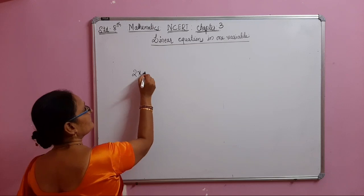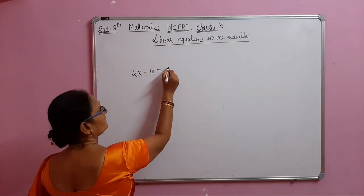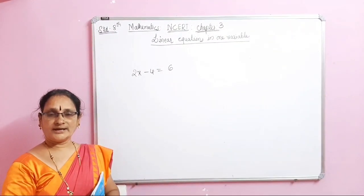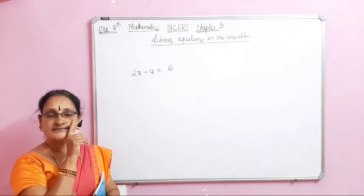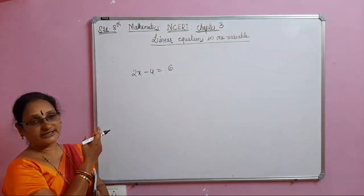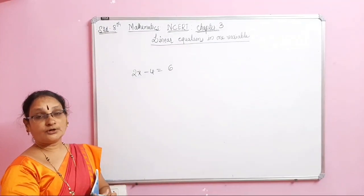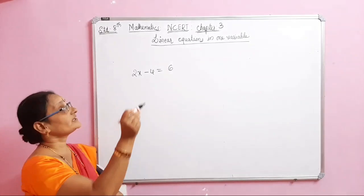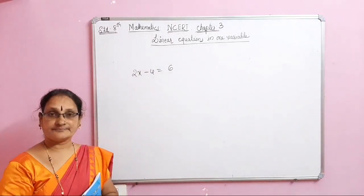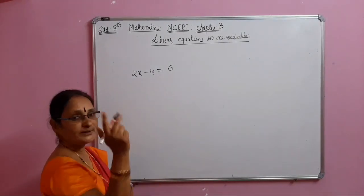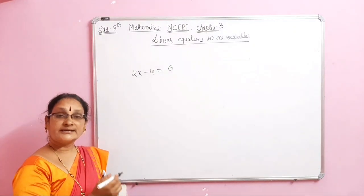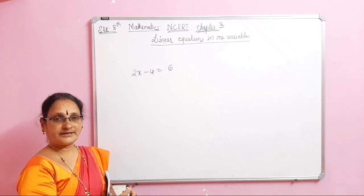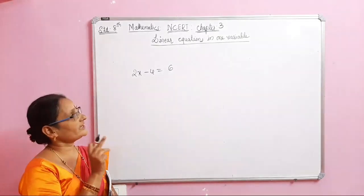2x minus 4 equal to 6. This is one linear equation. Now we have to solve it. There are two methods to solve linear equations: one is the elimination method — which you will have learnt in 7th standard — and the other is the transposing method.